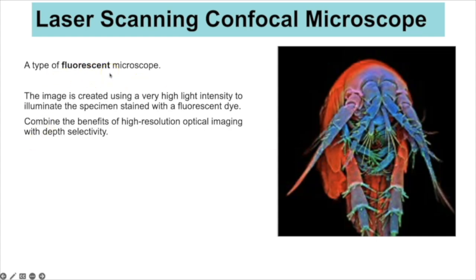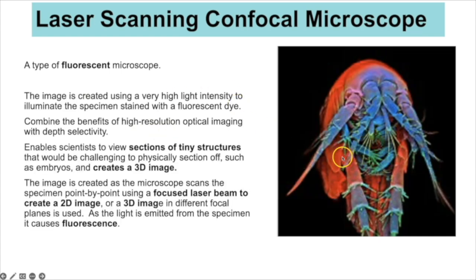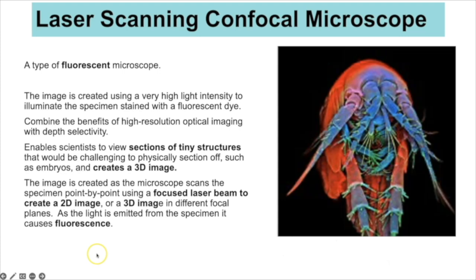The laser scanning confocal microscope is a type of fluorescent microscope. The image is created using high-intensity light to illuminate the specimen stained with a fluorescent dye, combining the benefits of high resolution optical imaging with depth selectivity. This enables scientists to view sections of tiny structures that would be challenging to physically section, such as in an embryo. The microscope scans the specimen point by point using a focused laser beam to create 2D or 3D images in different focal planes.